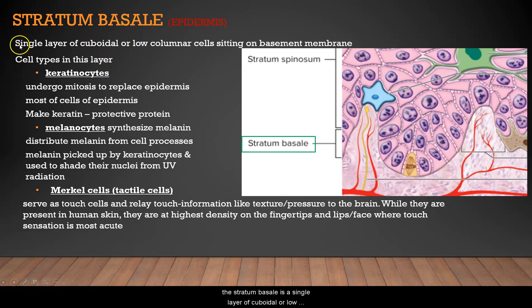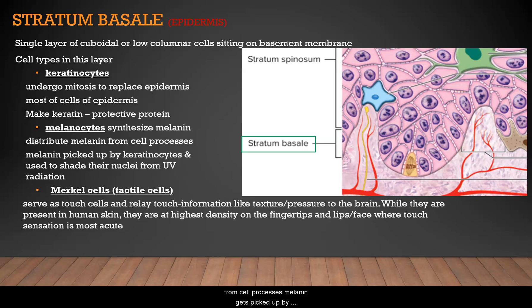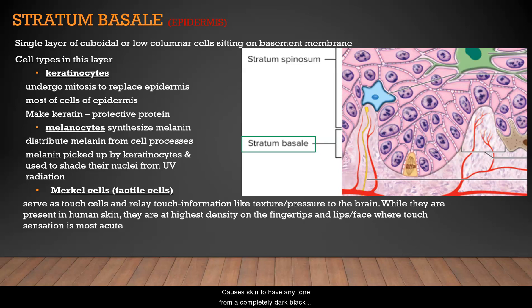The stratum basale is a single layer of cuboidal or low-columnar cells sitting on a basement membrane. The cell types here include keratinocytes, which undergo mitosis to replace cells in the epidermis and produce the protective protein keratin. The other cell type is melanocytes, which synthesize and distribute melanin. Melanin gets picked up by keratinocytes to shade their nuclei from UV radiation, and it causes skin tone ranging from completely dark black to lightly brown.